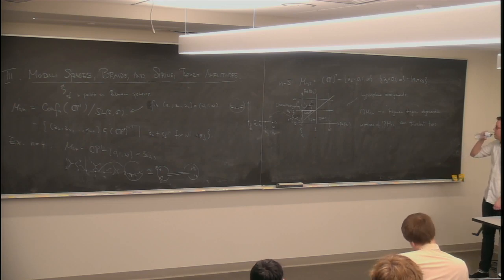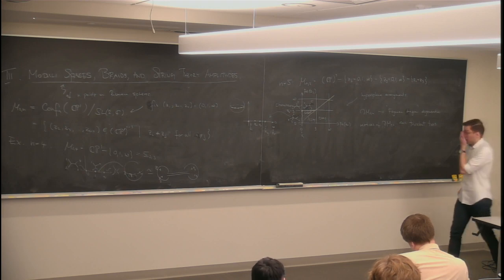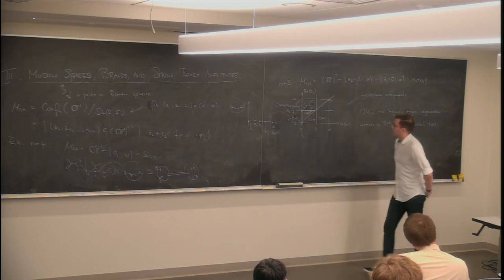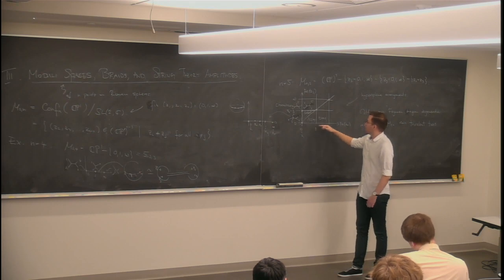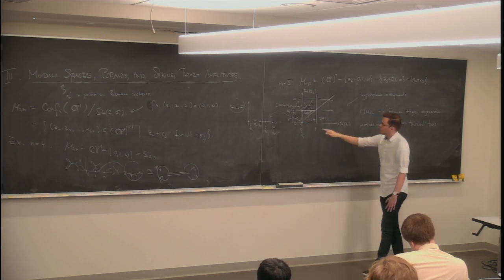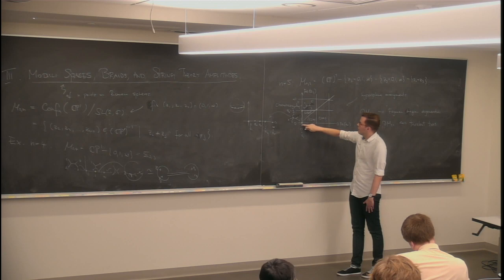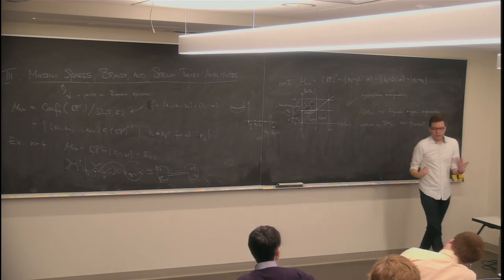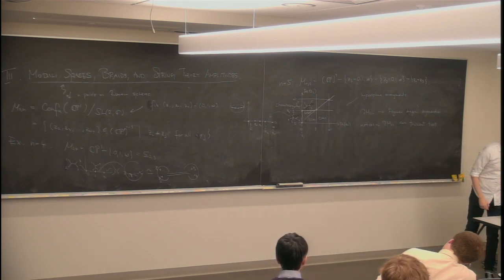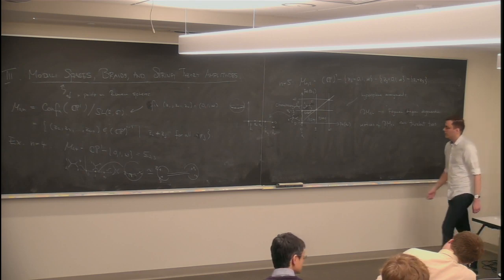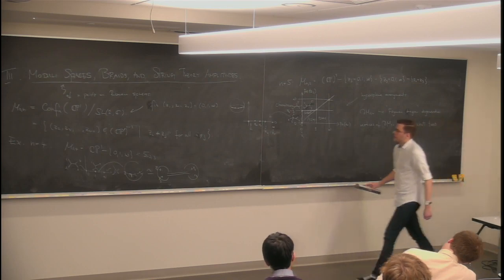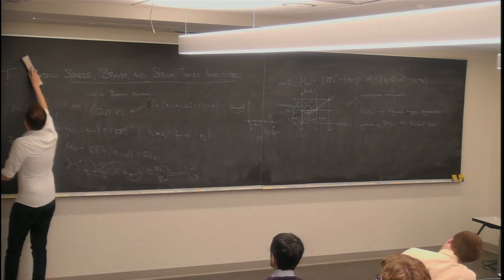That was more of an observation, because there are problems with this description. There are special points called exceptional divisors — for example where three points collide simultaneously, such as z_2 with z_1, z_3 with z_1, and z_2 with z_3 all at once. This singularity needs to be resolved, and that's something we'll handle in the later parts of this talk.